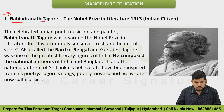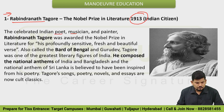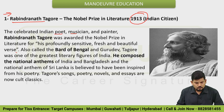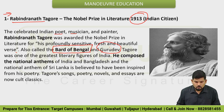Rabindranath Tagore received the Nobel Prize in Literature in 1913 — remember this year. He is a musician, poet and painter. Rabindranath Tagore was awarded the Nobel Prize in literature for his profoundly sensitive, fresh and beautiful verse. He is also called the Bard of Bengal — meaning poet of Bengal — and Gurudev. He received the Nobel Prize in literature in 1913.